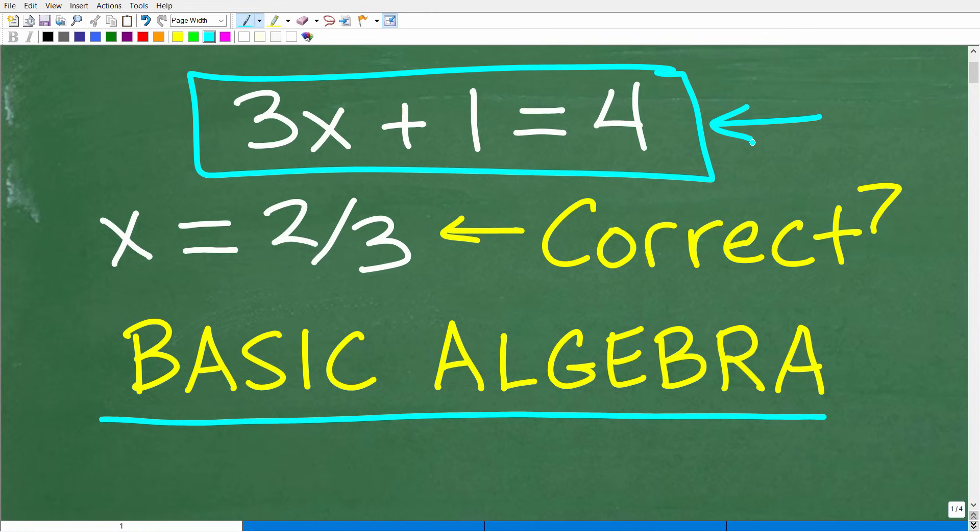Given the equation 3x plus 1 is equal to 4, is x equal to 2 thirds? Is this the correct solution?